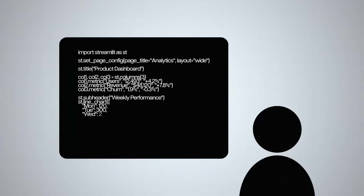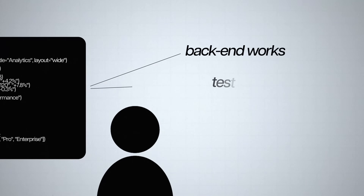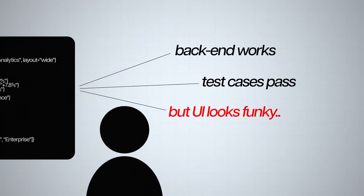If you've ever built something, you've definitely faced a situation where your back end works, your test cases pass, but the UI looks funky — maybe the spacing is wrong or the color is off, some CSS issue. Honestly, I hate CSS more than anything. I have been a software engineer for many years and never would I consider myself good at CSS.